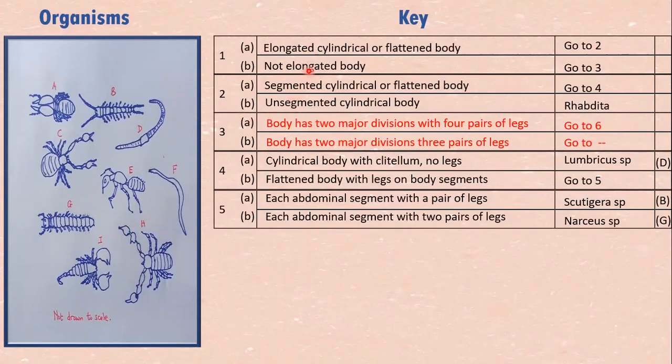So for the not elongated body, which we left three, we are now filling it in. There's one group that has a body with two major divisions and four pairs of walking legs. We give it, go to six. And we have to finish dealing with this group, sorting them completely out before we come to deal with this group. So this one is go to dash. We haven't, because we have to finish sorting this.